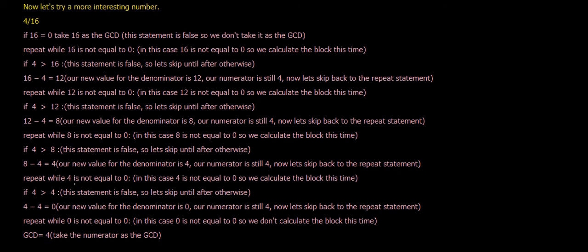Repeat while 4 is not equal to zero. In this case, 4 is not equal to zero, so we calculate the block this time. If 4 is greater than 4, this statement is false. So let's skip until after otherwise. 4 minus 4 equals zero. Our new value for the denominator is 0. Our numerator is still 4. Now let's skip back to the repeat statement. Repeat while 0 is not equal to zero — in this case, 0 is equal to zero, so we don't calculate the block this time. So GCD equals 4. Take the numerator as the GCD and we have our GCD: it's 4.